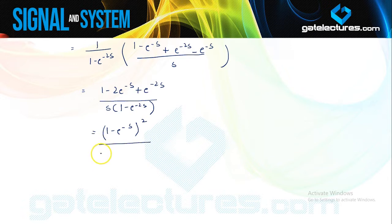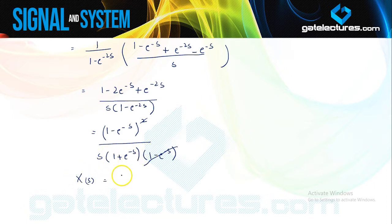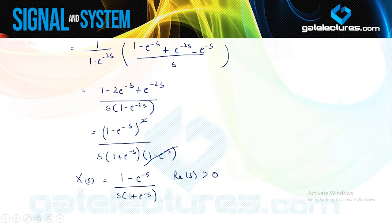I can write the numerator as (1 minus e to the power minus s) whole square, and using the a squared minus b squared identity, the denominator becomes (1 plus e to the power minus s) times (1 minus e to the power minus s). One term cancels, and the Laplace transform for the given function is (1 minus e to the power minus s) upon s times (1 plus e to the power minus s), with ROC as real part of s greater than 0.